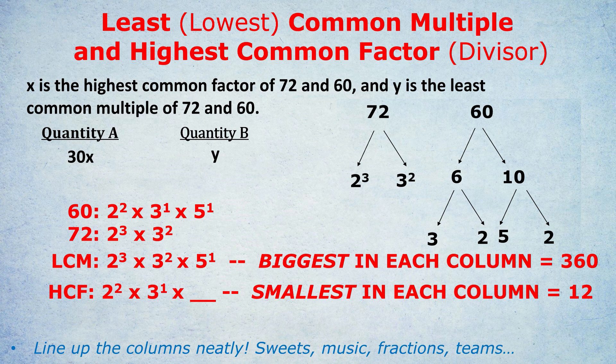Finally, we can quickly answer the question. 30 times X, which is the HCF, will be 30 times 12 or 360. And Y is the LCM, which is 360. So both quantities were in fact equal. Because the secret in a way is so simple, I've only chosen to do one further example of it. But for this next example, I want you to really pause the video and try yourself to work it out.